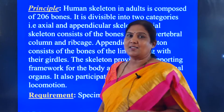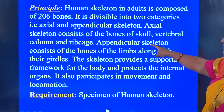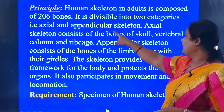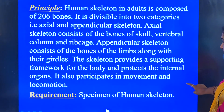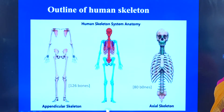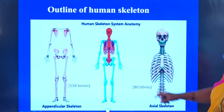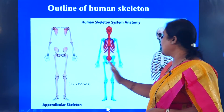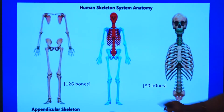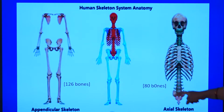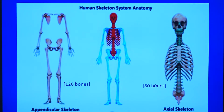In small children the number of bones is 300, and in adults it is 206. For our convenient studies, we classify them into the axial and the appendicular skeleton. The requirements for this experiment are a specimen of a human skeleton. We bifurcate this into axial skeleton and appendicular skeleton. In the axial skeleton there are around 80 bones, and in the appendicular skeleton there are 126 bones — totaling 206.